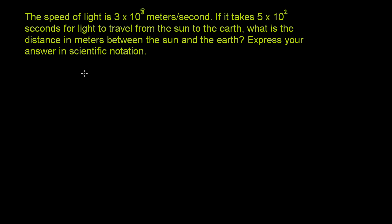So this is a simple distance equals rate times time problem. And I think what they really want to test is our ability to manipulate numbers in scientific notation. So what is our rate here? What is the speed of the thing in question? They tell us right here, the speed of light is 3 times 10 to the eighth meters per second. So the rate is 3 times 10 to the eighth meters per second.